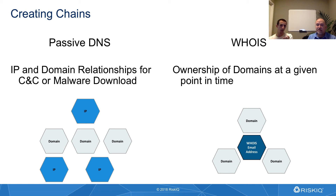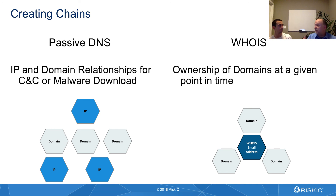And then on the WHOIS side, looking at ownership of domains and how we can leverage that data set to form connections as well. We looked at passiveSotal.org as our domain, and then we had that WHOIS email address that appeared to be unique — domains@riskiq.com. We ran a pivot on that, and we were able to discover a number of other domains that seemingly did not appear to be related to RiskIQ on the surface. But looking at the WHOIS records, we can identify the match between them. Even the telephone number might be associated with different email addresses completely, but those domains might all use that same telephone number, and we can link them together.